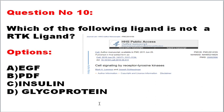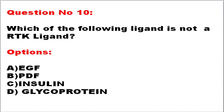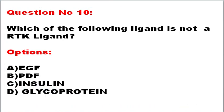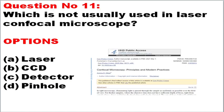The next question: which of the following ligands is not an RTK ligand? RTK is receptor tyrosine kinase — these are enzyme-linked receptors located on the plasma membrane with an extracellular ligand-binding domain, transmembrane domain, and intracellular protein tyrosine domain. Ligands of RTK include IGF (insulin-like growth factor), EGF (epidermal growth factor), PDGF (platelet-derived growth factor), and FGF. The glycoprotein is the odd one out — the correct answer is glycoprotein, which is not a ligand for the RTK pathway.